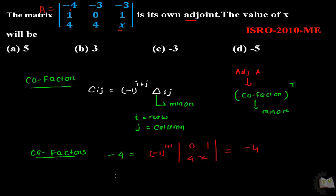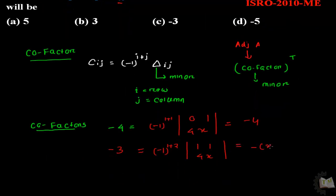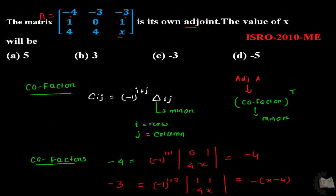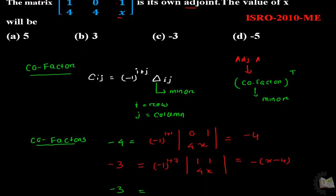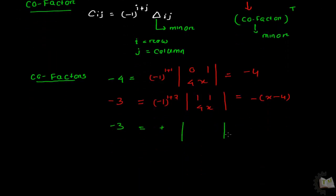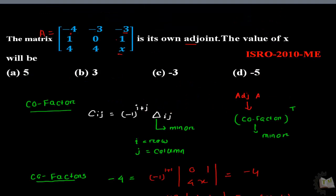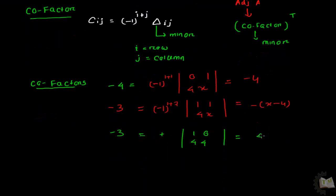Similarly, the cofactor of minus 3, which is in the first row and second column, is minus 1 to the power 1 plus 2, times the determinant: 1, 1, 4, x — giving x minus 4. For the next minus 3 in the first row and third column, it is positive and the determinant is 1, 0, 4, 4 — giving 4.